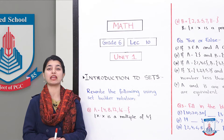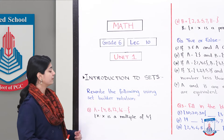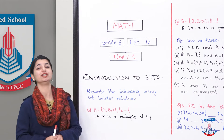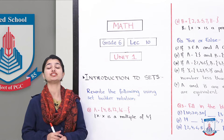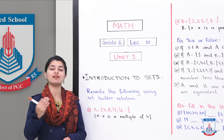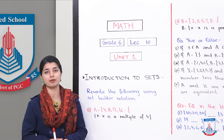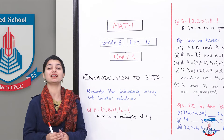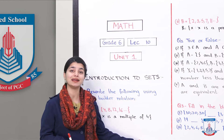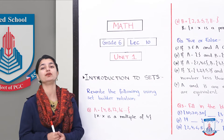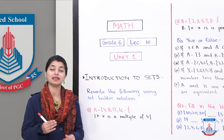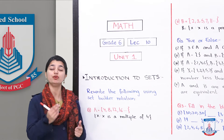Let's look at our first question from test paper 1. The first question is: write the following using set builder notation. In set builder notation, you make a rule that is applied in the form of X. You have 4 sets shown in tabular form, and you have to convert them into set builder notation.